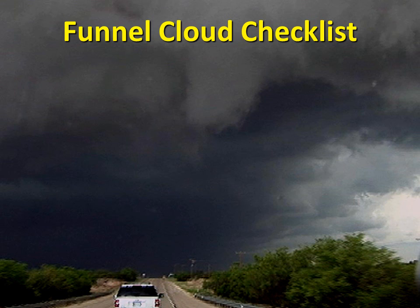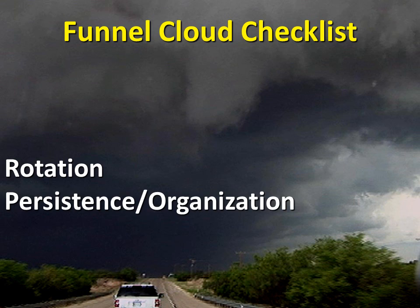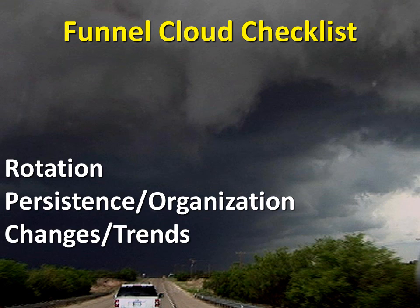Here are some key things to look for to determine if it's really a funnel cloud. Is it rotating? The rotation may be very difficult to see depending on the lighting and the storm location. How persistent is the funnel cloud? Even if you can't see definite rotation, a persistent funnel-shaped cloud in the right part of the storm is something that should be reported. Also watch for trends to see if the funnel is lowering toward the ground or if rotation is increasing. Remember to describe only what you see without trying to predict what may be happening minutes from now.